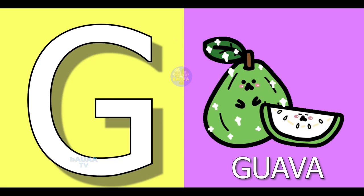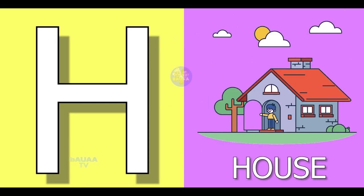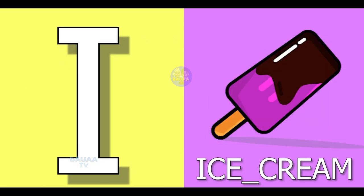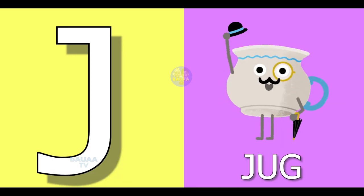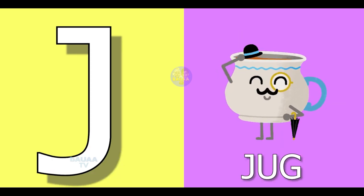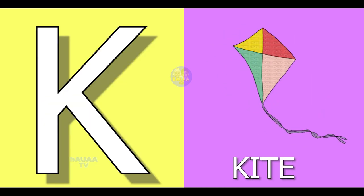G for guava, H for house, I for ice cream, J for jug, K for kite.